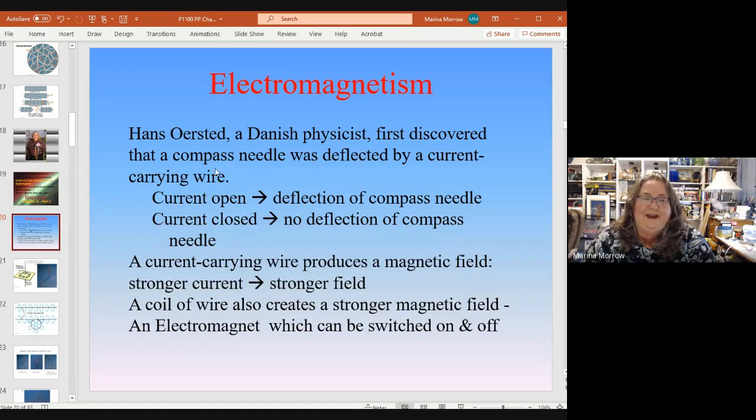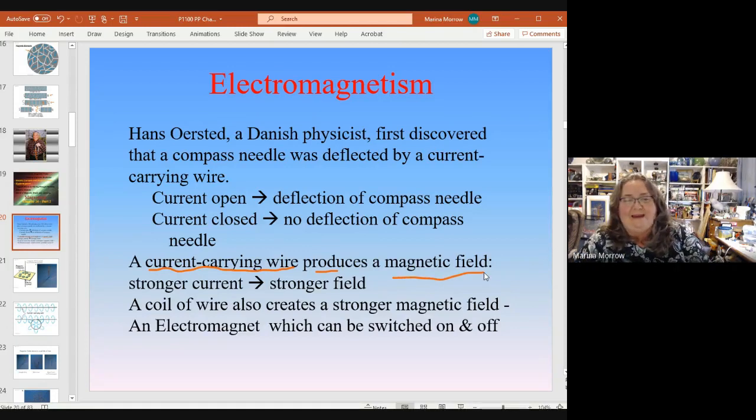He discovered that a compass needle was deflected by a current-carrying wire. You've got a wire and you put current through it, and the needle of a nearby compass will be tilted toward or away from it. But the current had to be flowing - moving charge particles. What's happening is the current-carrying wire is producing a magnetic field. Currents of electricity create magnetism.